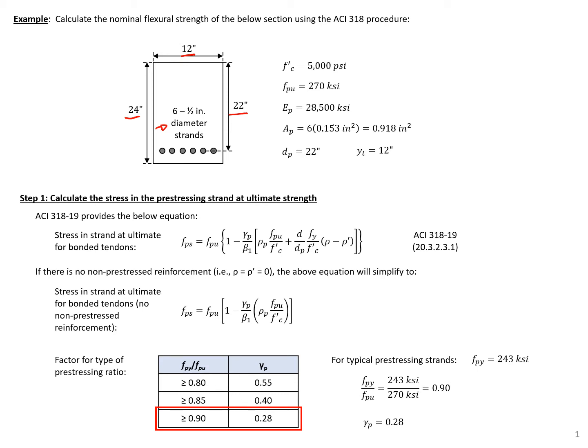We have six half-inch diameter strands, giving us the total area of prestressing. We also have grade 270 ksi strands and 5 ksi concrete.